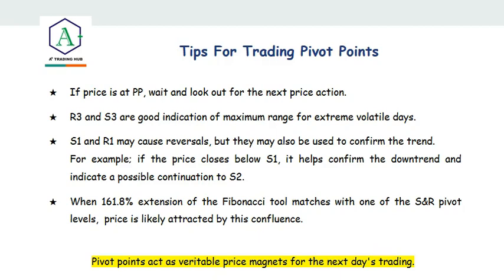Here are a few tips for trading pivot points. If price is at the PP, wait and look out for price action — such as price rejections or candlestick formations — before deciding to buy or sell. Don't just jump in. R3 and S3 are a good indication of the maximum range for extremely volatile days. If in a particular day the market is extremely volatile, once price reaches R3 or S3, you'll see price start slowing down, looking for pullbacks and corrections, no matter how strong the momentum.